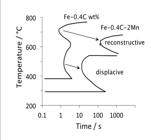In the case of reconstructive transformations, the manganese will be partitioning, and that is not the case for displacive transformations. But why is a displacive transformation retarded, albeit by a small amount, by adding manganese? When there is no partitioning, the only effect an alloying element has is in influencing the relative free energies of austenite and ferrite. Manganese reduces the free energy of austenite and therefore makes the transformation slower. The general term people use is that manganese is an austenite stabilizer, meaning it reduces the free energy of austenite.